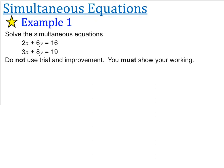Hello, year 10. We're going to finish off today with simultaneous equations. It's going to have one additional step from yesterday, but other than that, it's going to be the same as the last two days. So today we're asked to solve the simultaneous equations: 2x plus 6y is equal to 16, and 3x plus 8y is equal to 19. It says do not use trial and improvement, and you must show your working.